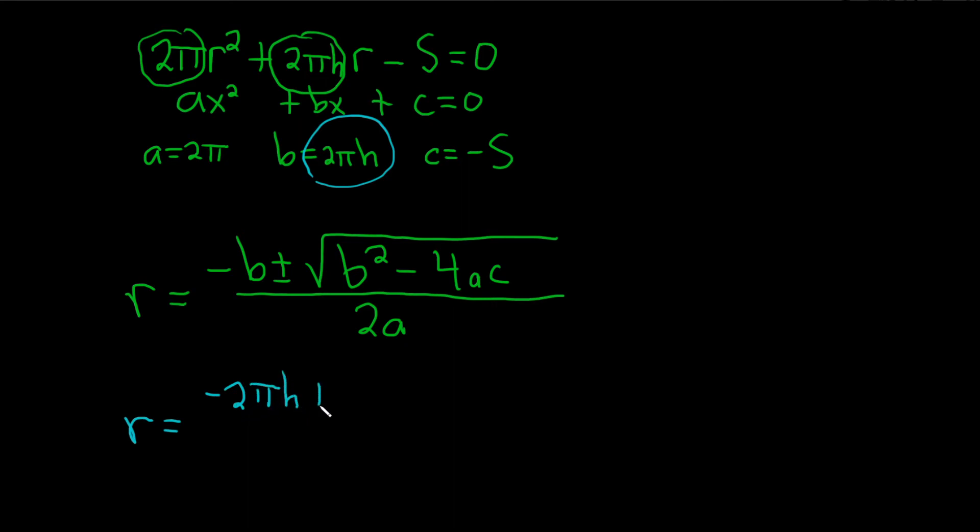plus or minus the square root of b squared. So we're going to take this b and we're going to square it. I won't skip any steps. So 2πh squared minus 4, and then a was 2π, so this is 2π, and then c was negative s, so negative s. All over 2a. So 2a is 2 times 2π, so that'll be 4π.